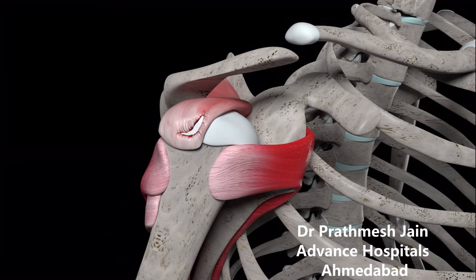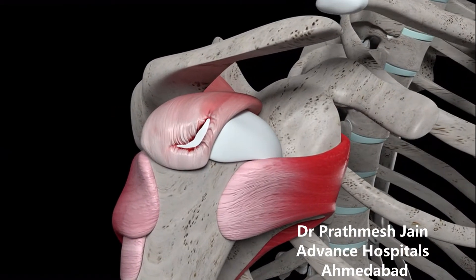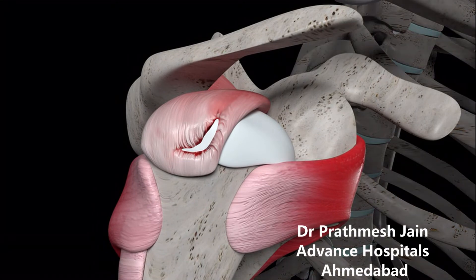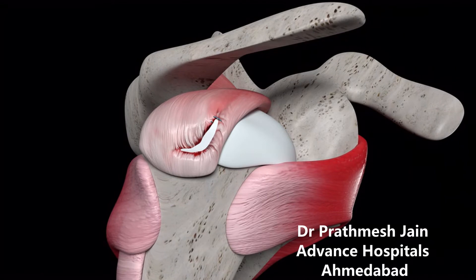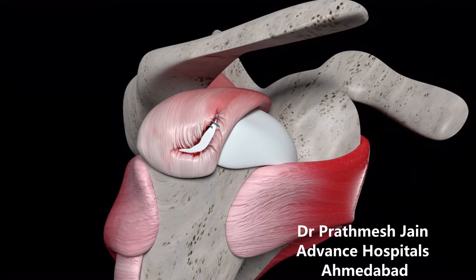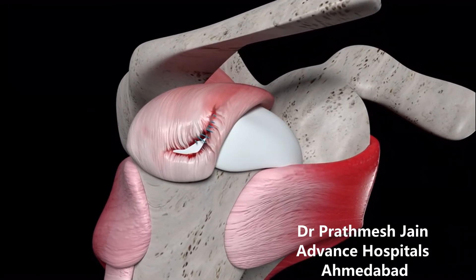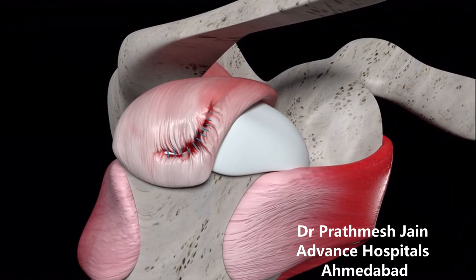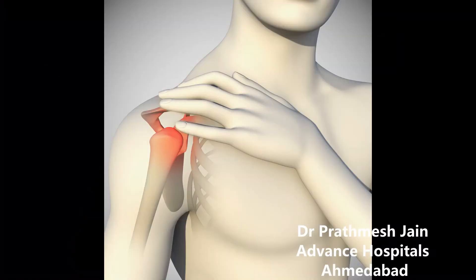This can be repaired nicely by use of suture anchors or sutures. By passing multiple sutures through the anchor we can tie the torn rotator cuff tendon back into its place. Once it is done we need the patient to be on rest for some time, and once it is healed the patient will be able to do most things.